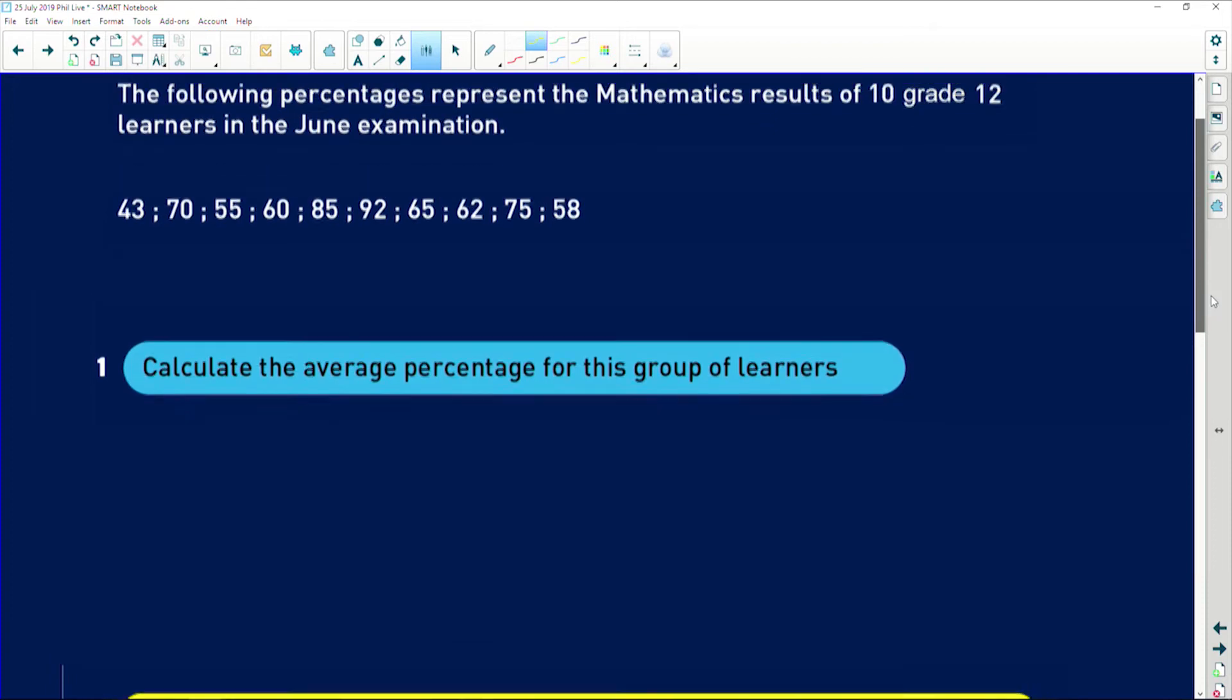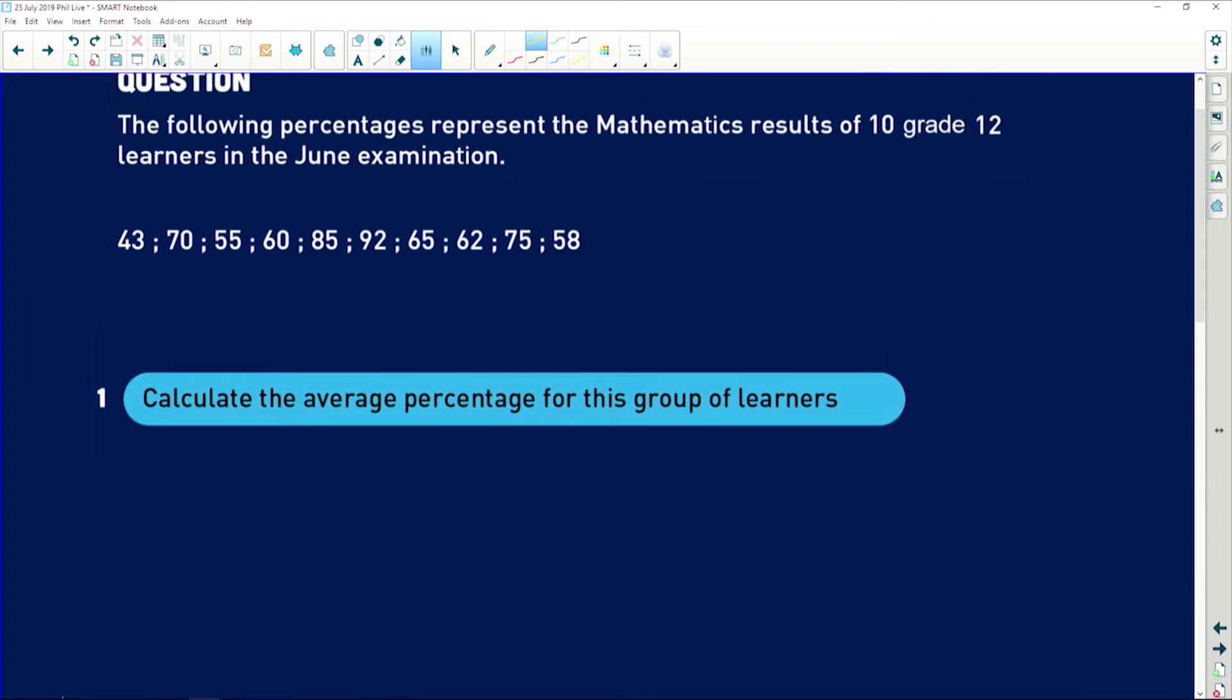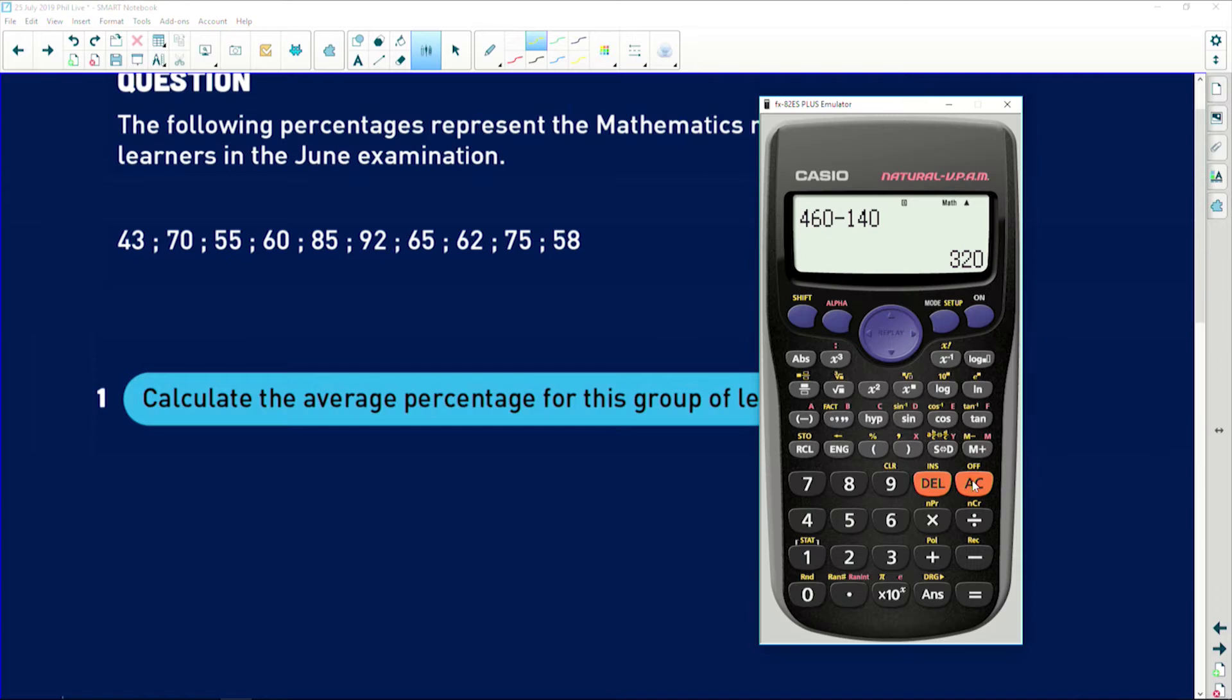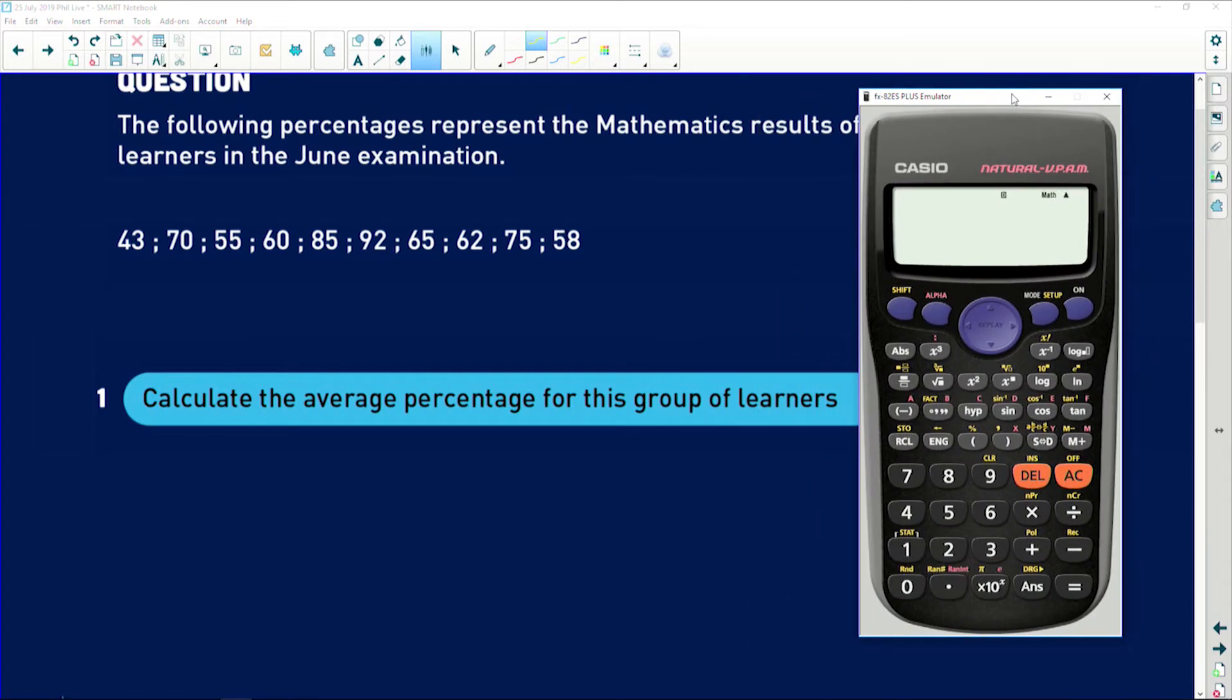Firstly, it says calculate the average percentage for this group of learners. So I'm going to be lazy and do the calculator thing because the moment you see average, you're probably going to be asked to calculate standard deviation and that's where your calculator comes in handy.